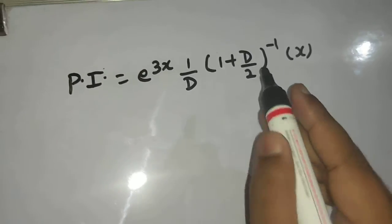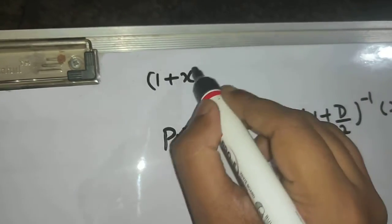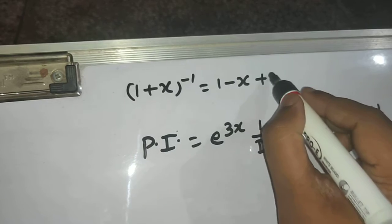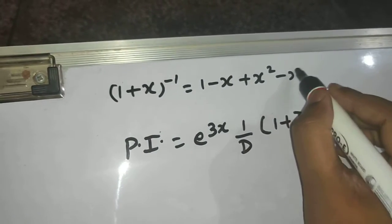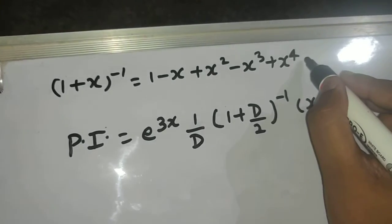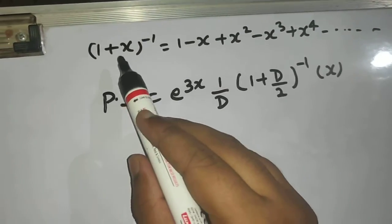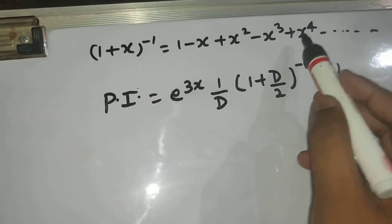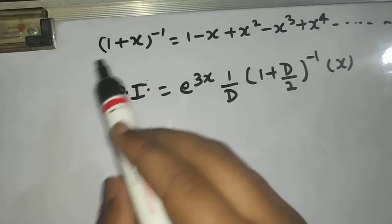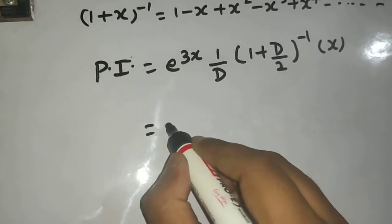1 plus x raised to power minus 1 is 1 minus x. Let us write that. So this is 1 minus x plus x square minus x cube plus x power 4 minus so on. Here if you have plus you will get alternate plus minus sign. Here if you have minus you will get all positive. So this is the thing, so we can expand using that.